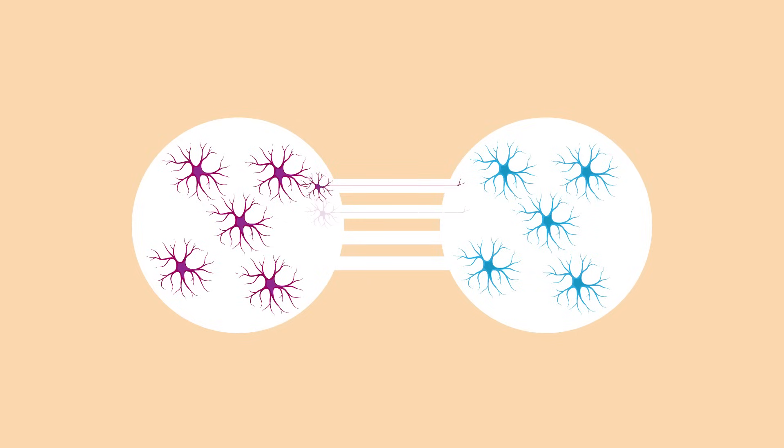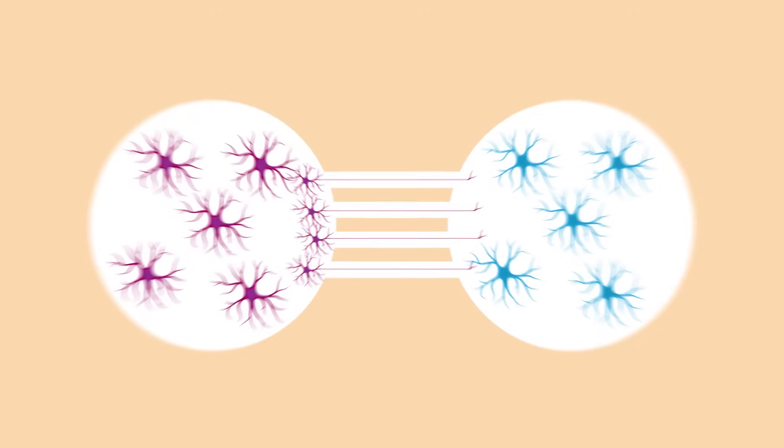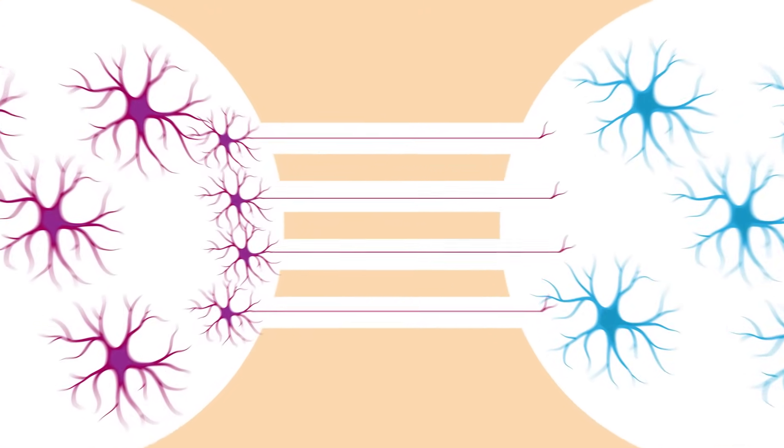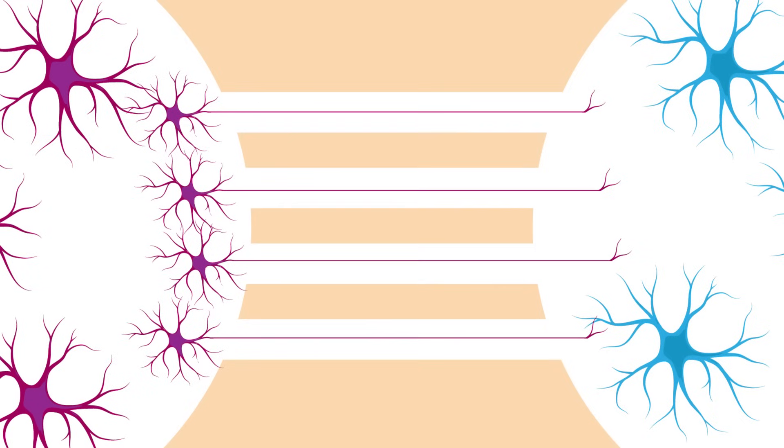To connect with other cells, neurons can grow thin branching structures called neurites, which convey the electrical signals produced by the main body of the cell. Taking advantage of this, the Sandvig team uses thin microfluidic channels that are wide enough to allow these neurites to grow through, but too small to let the main bodies of the neurons in.